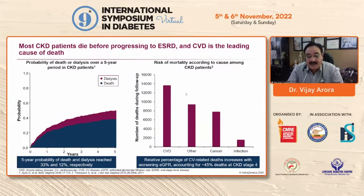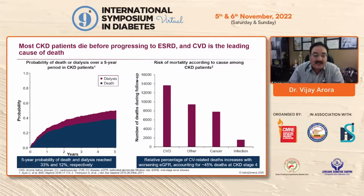The relative percentage of cardiovascular-related deaths increases with worsening eGFR, accounting for about 45% of deaths at CKD stage 4.